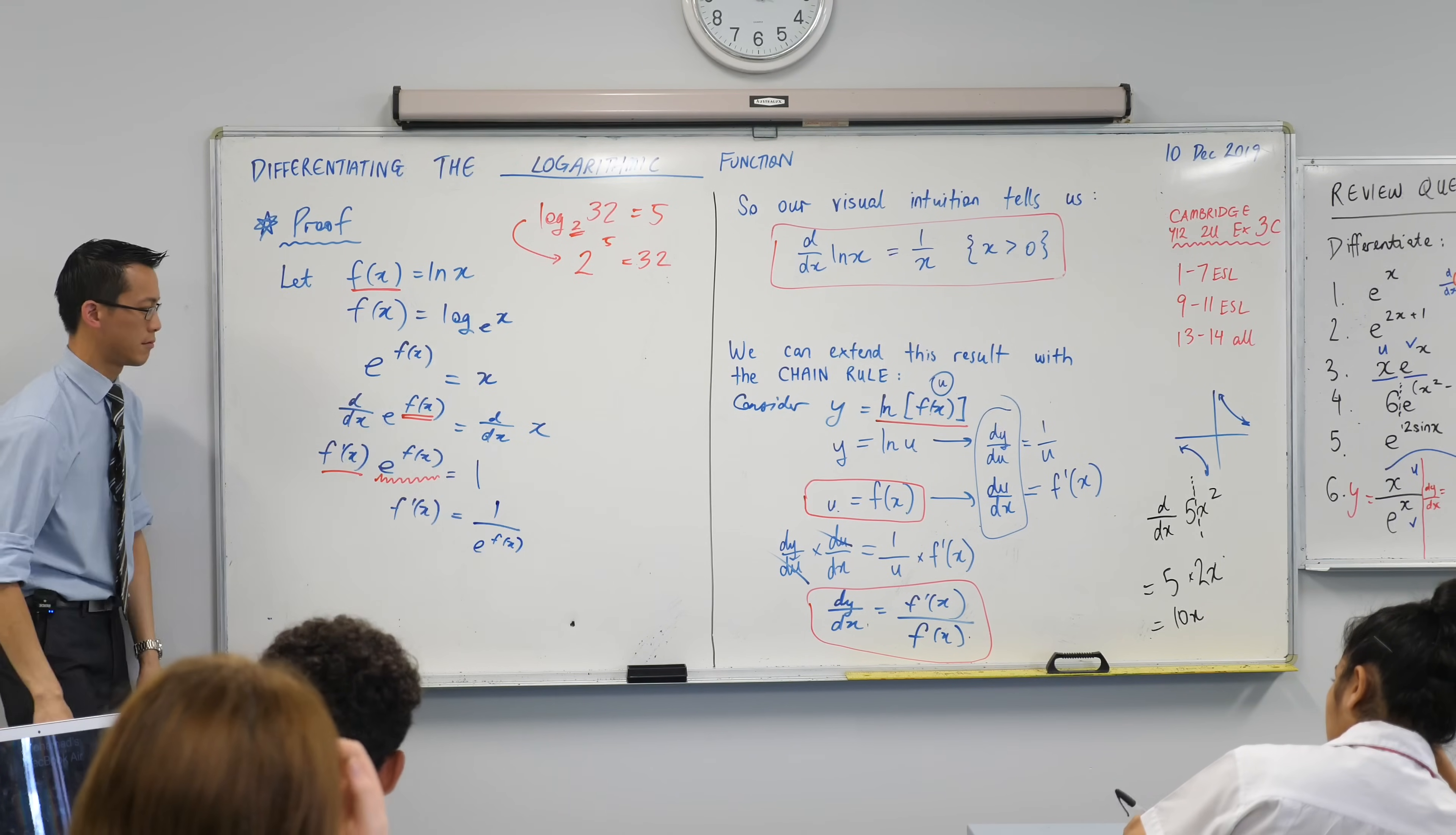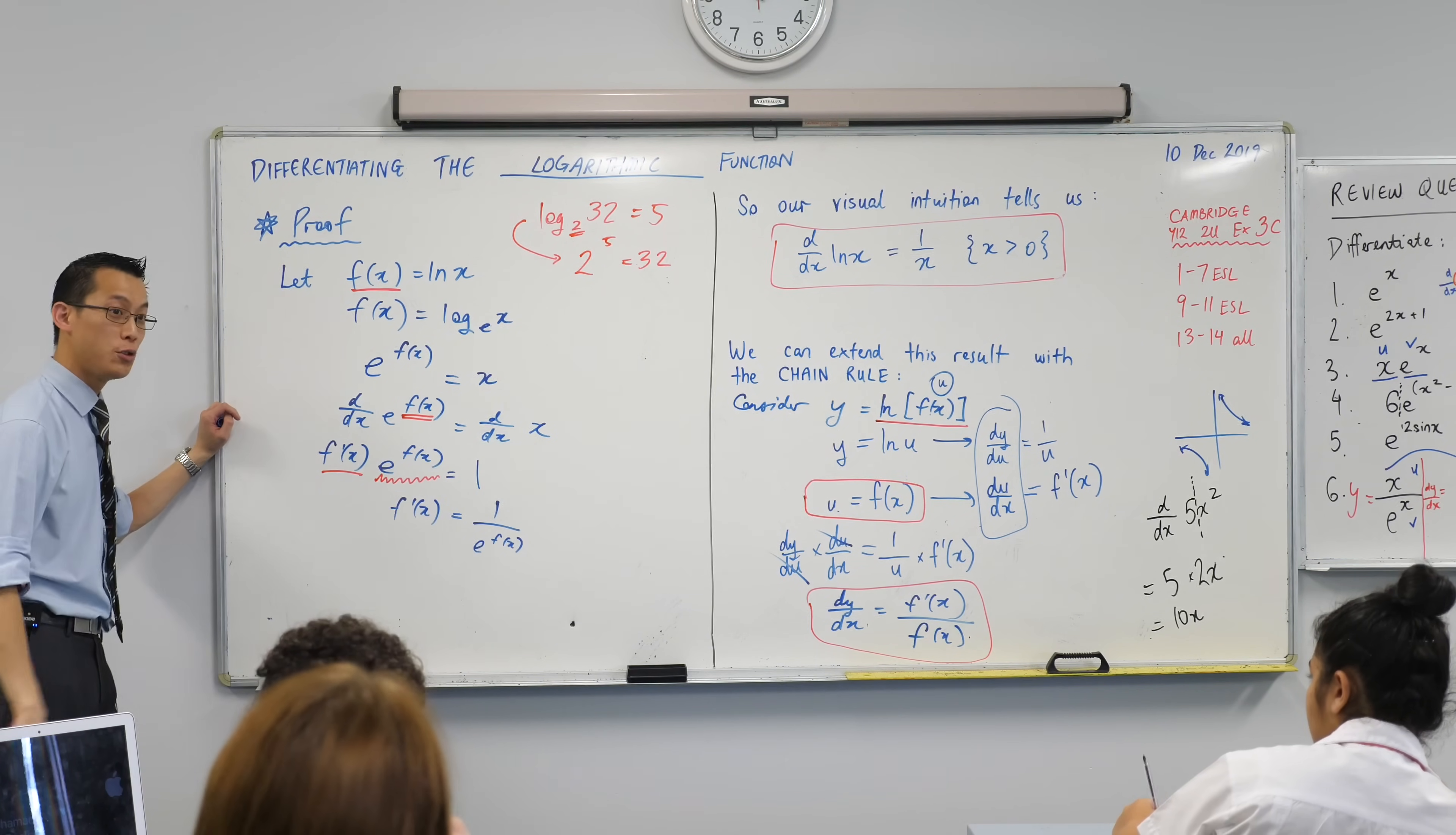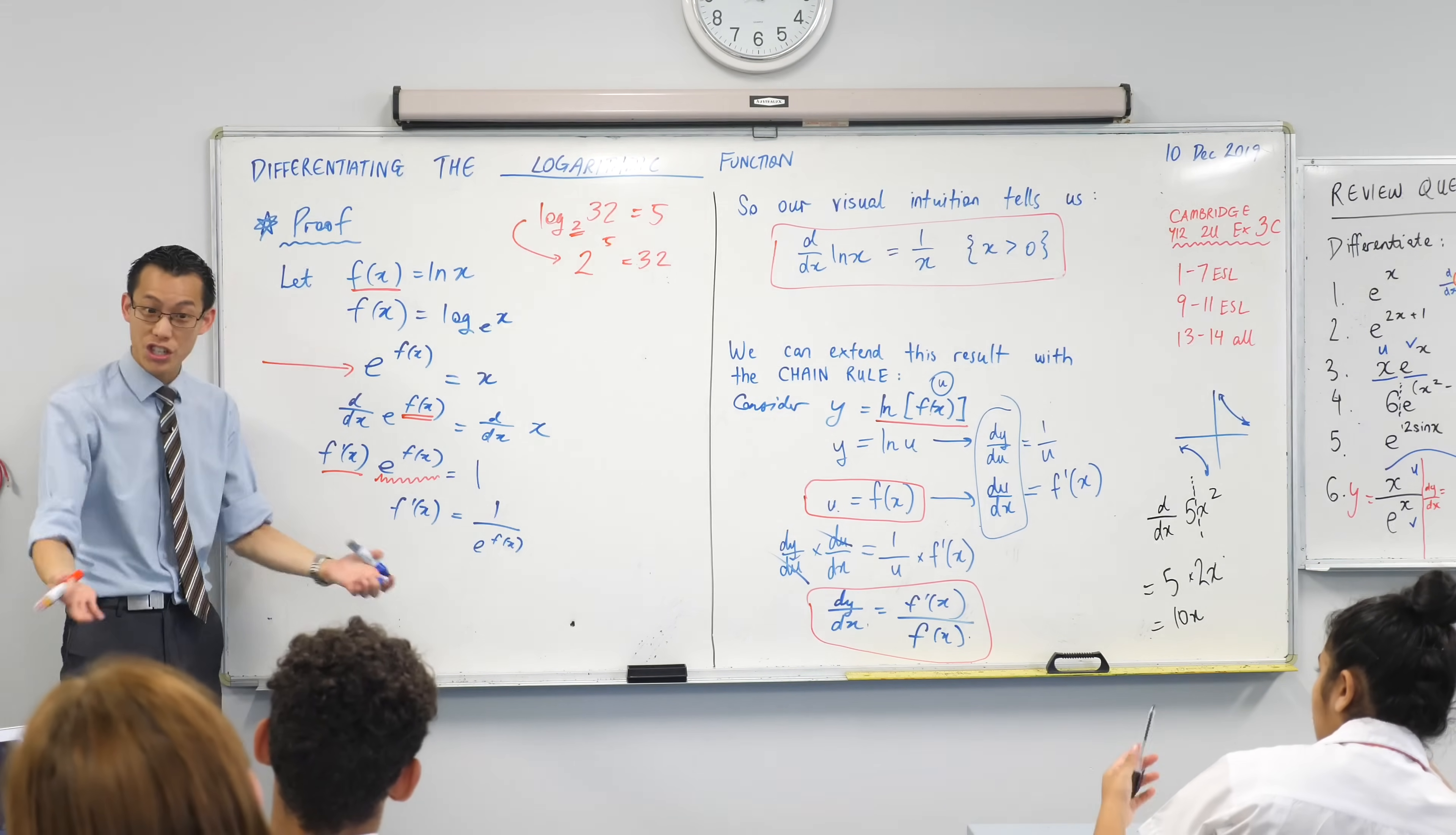Wait a second. I divided both sides by this. Look closely. This e to the power of f x that I just divided by, look up a few lines. I can write that in a much simpler way, can't I? Have a look right here. There it is. E to the power of f x, it's just x. Like by definition. You helped me write this equation.